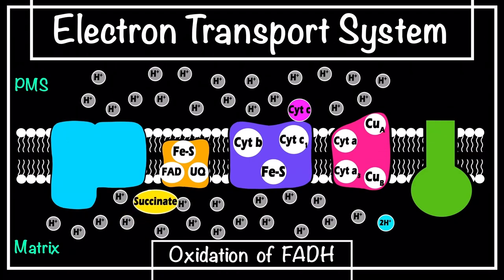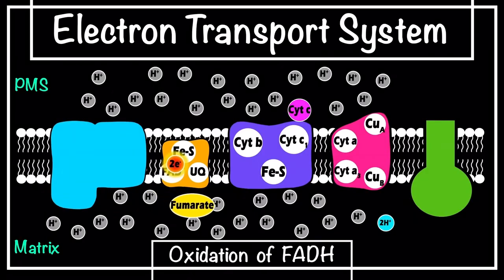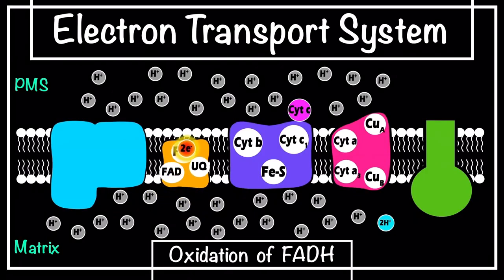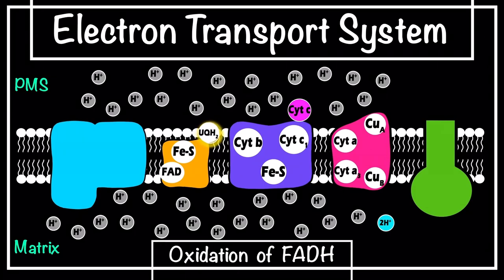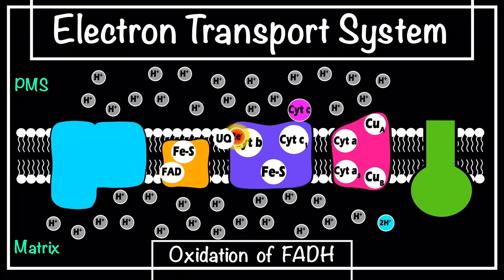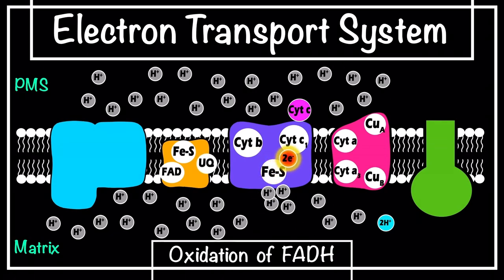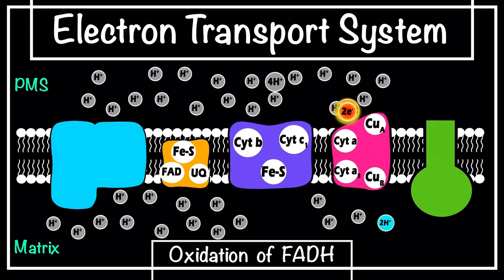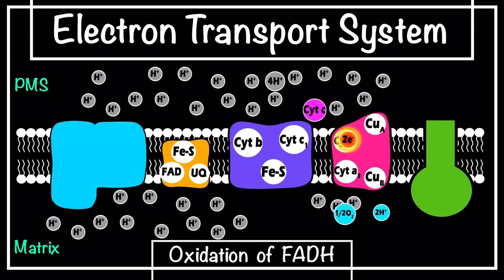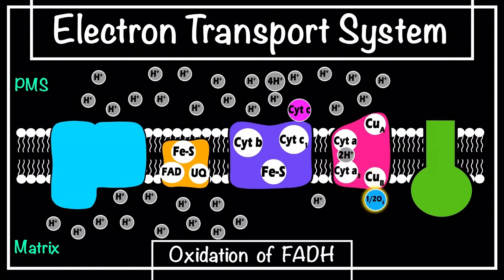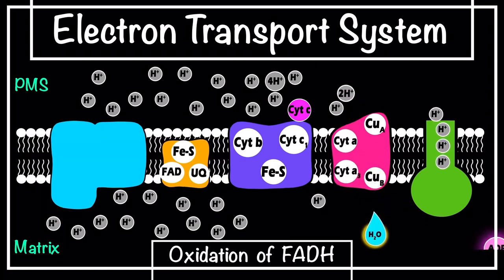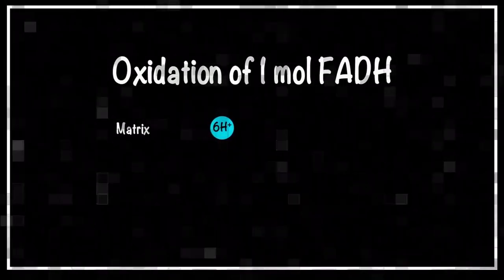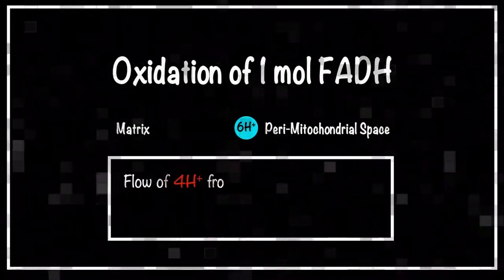Now let's see the mechanism with respect to oxidation of FADH. This starts from Complex II, also called succinate dehydrogenase — the same enzyme involved in the oxidation of succinate into fumarate in the Krebs cycle. Two electrons released move through the electron carriers of Complex II, are transferred to Complex III, then to Complex IV, and ultimately accepted by the terminal electron acceptor, oxygen. Four protons are pumped through Complex III and two protons through Complex IV, giving a total of six protons, which results in the formation of 1.5 ATP from oxidation of one molecule of FADH.